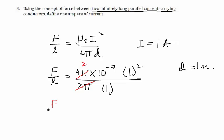So what do we get here? We get force per unit length equal to 2 × 10⁻⁷ newton per meter.